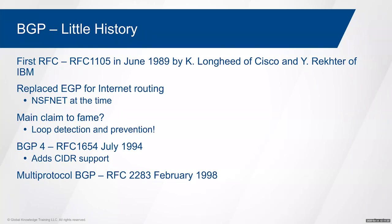BGP has evolved a lot since those early days. The number of RFCs related to BGP is significant — there are books just about the RFCs that are 1,000 pages long. There have been many modifications to the protocol over the years to add functionality and capability. One of the biggest additions was classless interdomain routing, which gives much more flexibility in how routing information is advertised. BGP was the first protocol to do that.